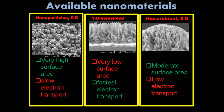To summarize the available nanomaterials: this is a nanoparticle (zero dimension) — it has very high surface area but slow electron transport. This is one dimension (nanorod/nanofiber) — it has very low surface area but positive/faster electron transport. This is hierarchical three dimension — it has moderate surface area but low electron transport. And these are vertical nanorods — they have very, very high surface area but very low electron transport.